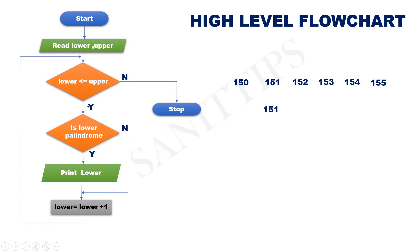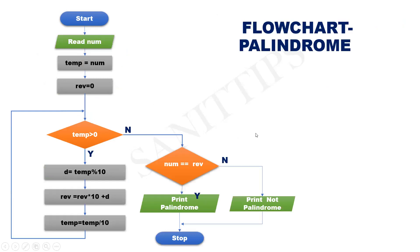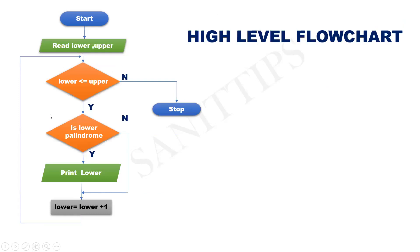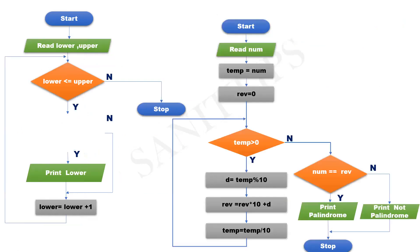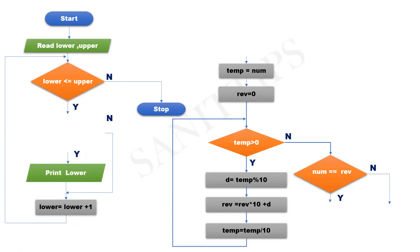So this is the high level flowchart. In this flowchart, the part 'is lower palindrome?' we need to replace with the specific steps. This is the flowchart for finding whether a number is palindrome or not, and we replace that part with this one. There is no need for reading the number — we are finding whether lower is palindrome or not. So instead of temp equal to num, we replace with temp equal to lower. Take this part and insert here.